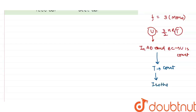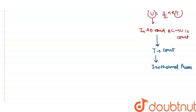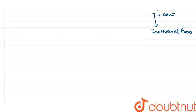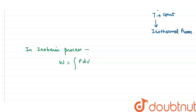In an isobaric process, the work done is given by W = ∫p dV. Since pressure is constant, this simplifies to W = p·ΔV, where ΔV is the change in volume.